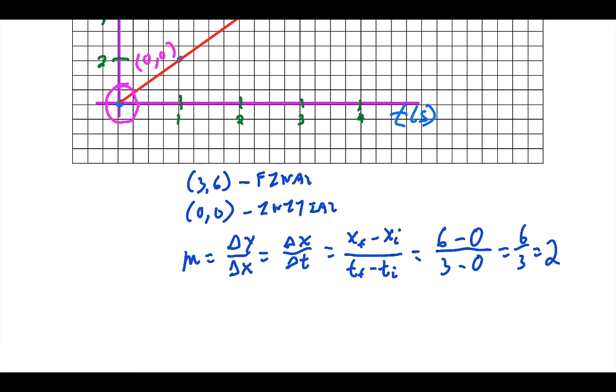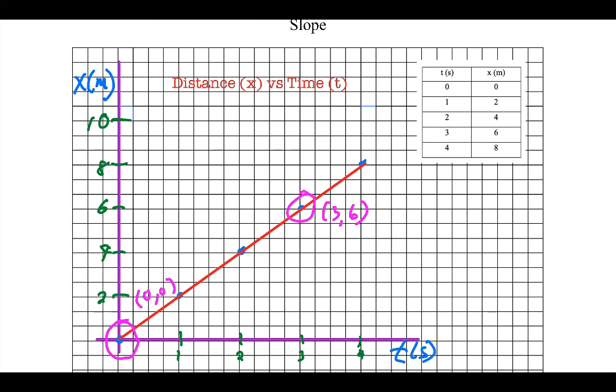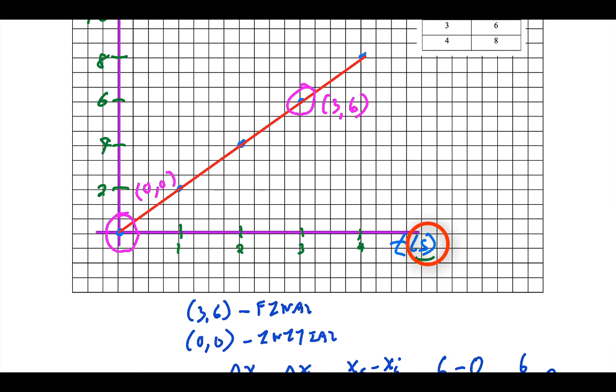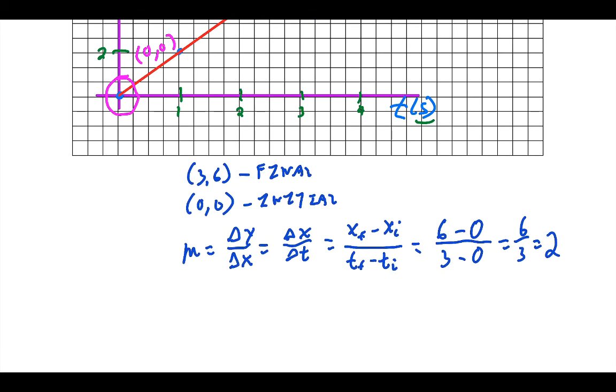That looks like I'm done, right? Well, I'm not because I'm missing an important thing: units. What are the units here? Interesting enough, what you can do with numbers, you can do with letters. The units on the y axis were meters, and on the x axis were seconds. That's why it's important to label those things. So it's always the units on the y axis, which in this case is meters, over the units on the x axis, which is seconds. So now the actual slope is two meters per second.